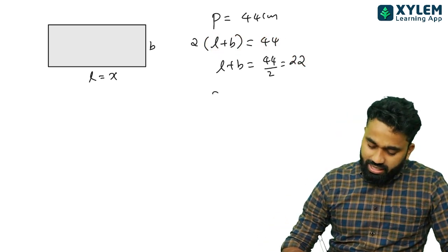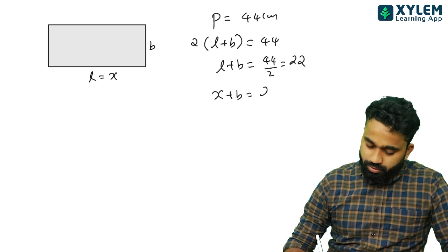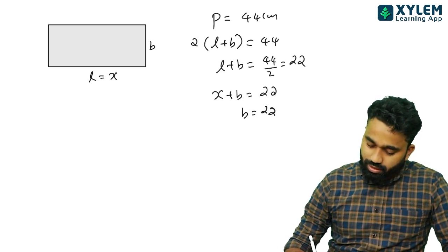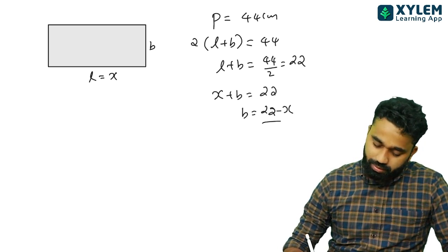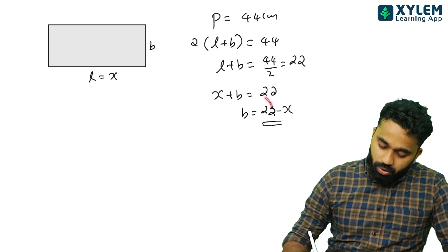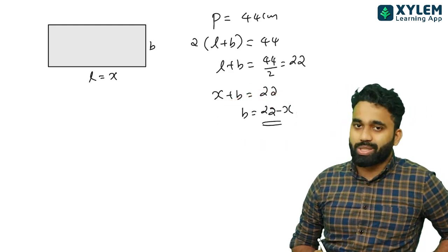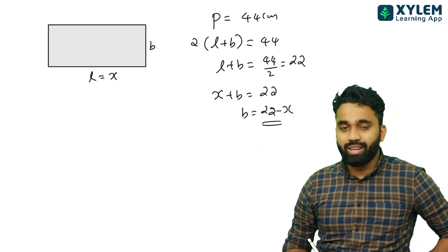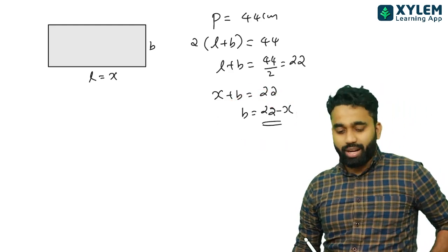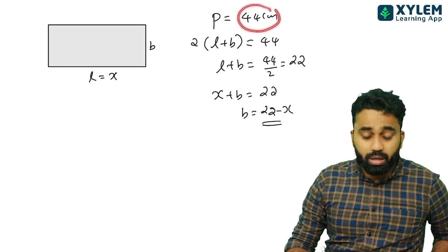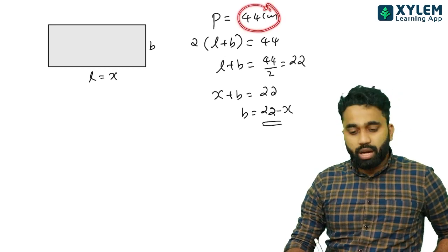What is v? Then v is 22 minus x. This is my answer. This is important. You can tell the trick that the perimeter gives x as the length, so the breadth is 22 minus x.